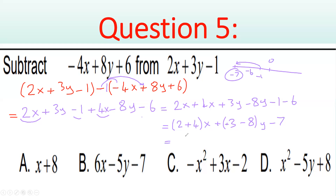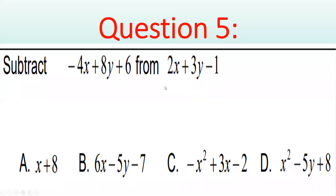For 2x + 4x: both are positive, so add them — 2 plus 4 equals 6x. For 3y − 8y: one is positive, one is negative, so subtract and use the sign of the bigger value. 8 is larger than 3, so the result is negative, and 8 minus 3 equals 5 — giving −5y. Final answer: 6x − 5y − 7. The answer is B.